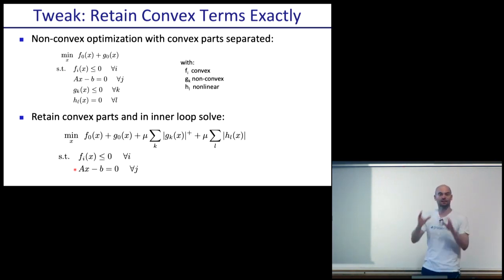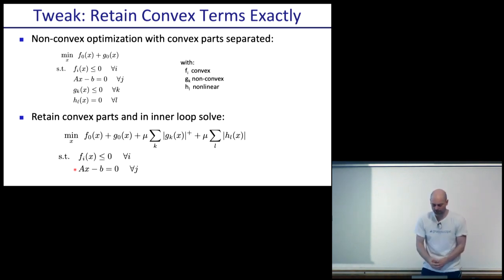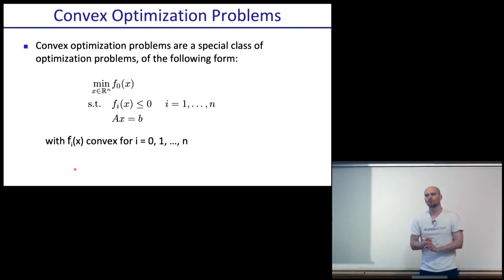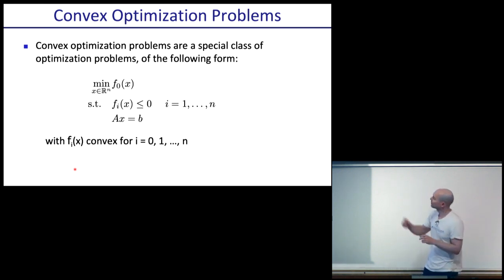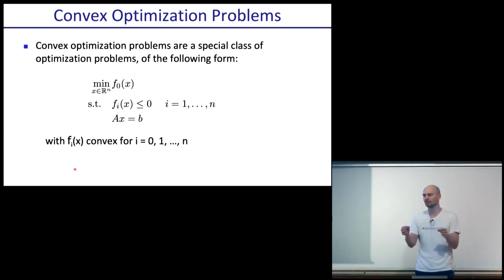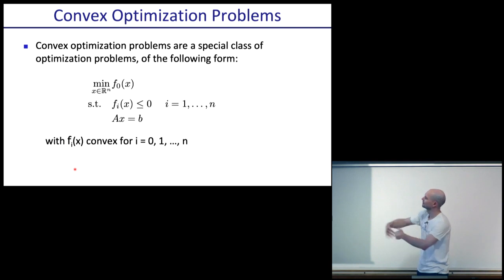We've seen all the outer parts — now let's look at what happens inside. When we actually try to solve that inner problem, how do we solve it very efficiently? Convex optimization problems have a convex objective and possibly some inequality and equality constraints, where every function f_i has to be convex. A convex function is bowl-shaped, and the region where it's smaller than zero is a convex set where any line between two points in the set lies within the set.